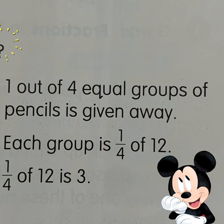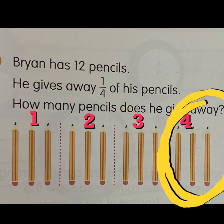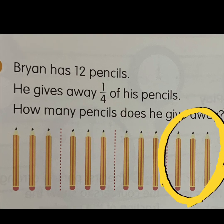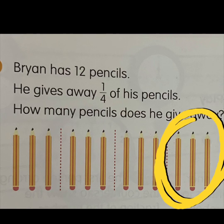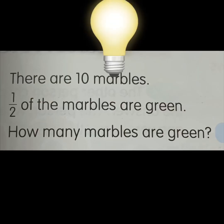Also make a note, in each group we have three pencils. Now pay attention: one out of the four groups of pencils is given away. If I am going to take one group out of the four groups, it means one fourth of twelve — that is a quarter of twelve. So from these four groups with three pencils in each group, I take one group out, so he gave away three pencils.